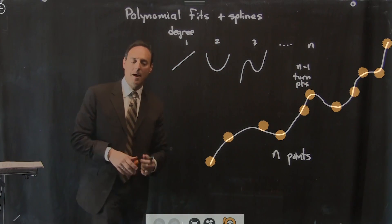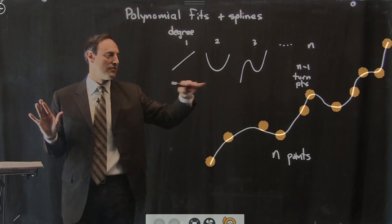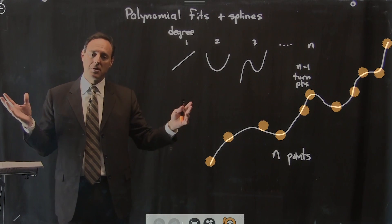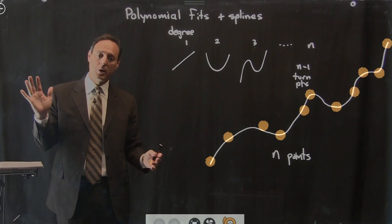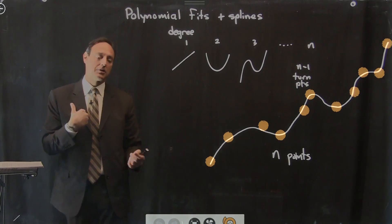And one of the things that happens is, suppose I have 100 points, that means it's got to take 99 turns to fit the data. And this generates a phenomenon called polynomial wiggle. And we're going to see examples of this when we apply the MATLAB to this in the next lecture.